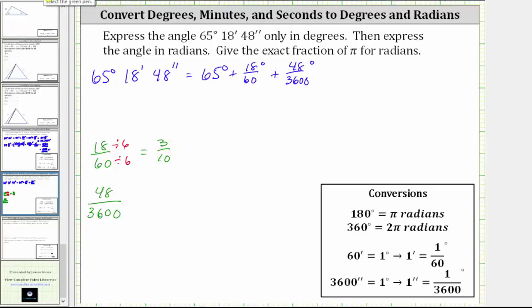To simplify 48/3600ths, we divide the numerator and denominator by 48, because 48 is the greatest common factor between the numerator and denominator. And this simplifies to 1/75. So now we can write the angle as 65 degrees plus 3/10ths of a degree plus 1/75th of a degree.